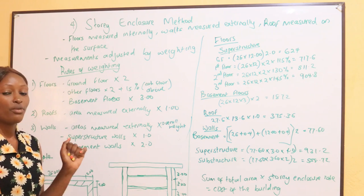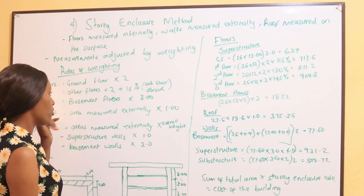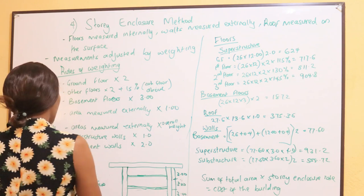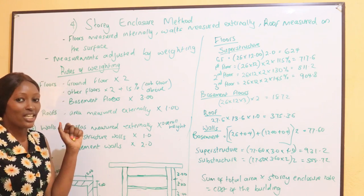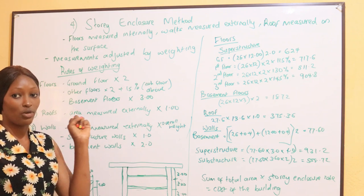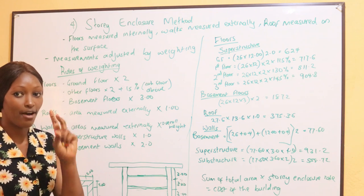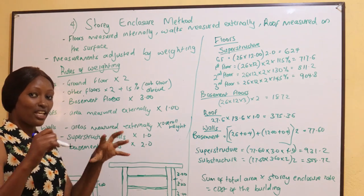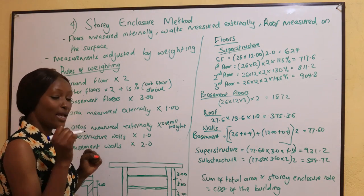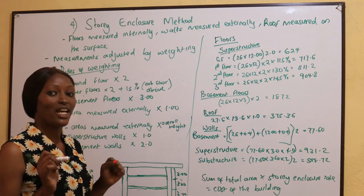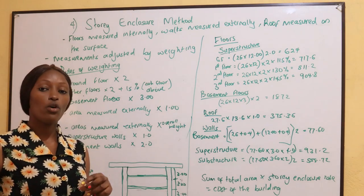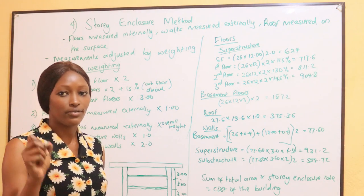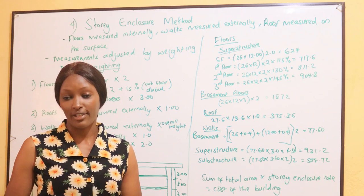The rules of weighting: before we do an example, we have several rules. For floors, we take the area of the ground floor and multiply by a factor of two. We go to the other floors, find the area of each floor, multiply by two, then add an additional 15%. So for the first floor, we multiply by a factor of two and add an additional 15%.